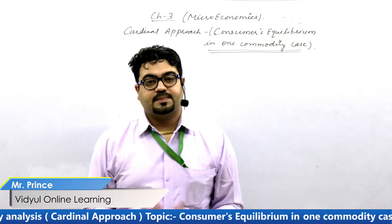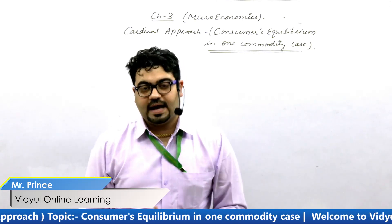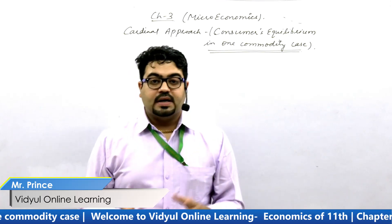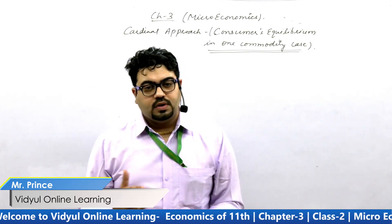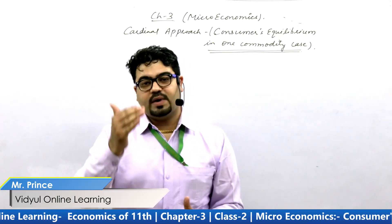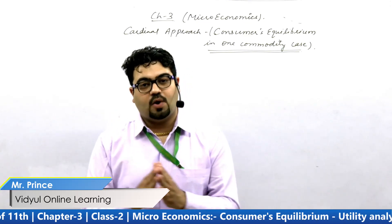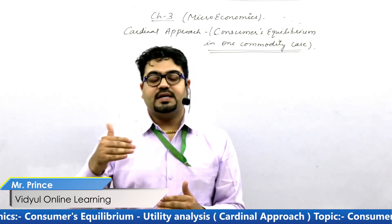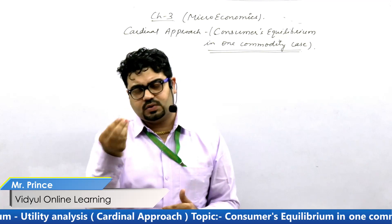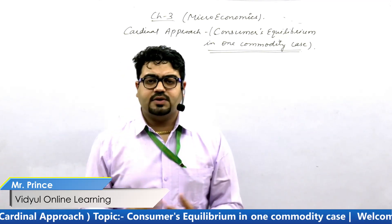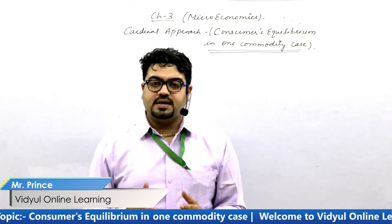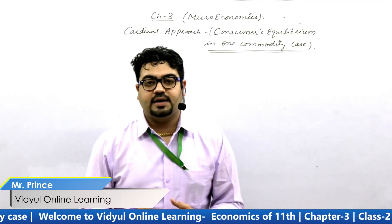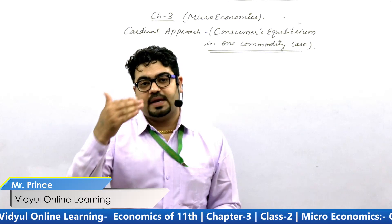A very warm good afternoon to all of you students. I am standing here before all of you with the objective to help you in economics. We are discussing microeconomics chapter 3rd, Consumer Equilibrium Cardinal Approach. On Saturday I taught you about the basic fundamentals of the Cardinal Approach — what is meant by utility, the distinction between Cardinal and Ordinal Approach, who gave each approach, and the subject matter of both. I also told you about Total Utility and Marginal Utility, how to calculate TU and MU, the relation between them, and the law of diminishing Marginal Utility with tabular and diagrammatic presentation.